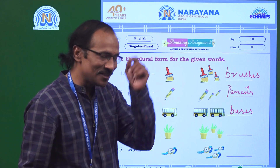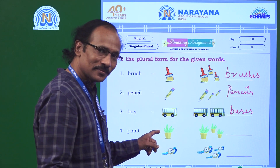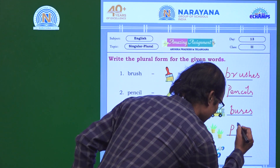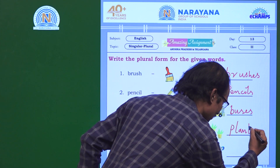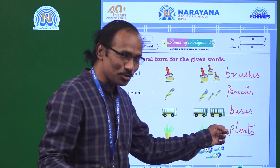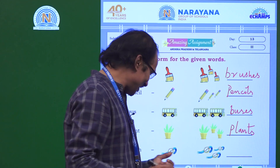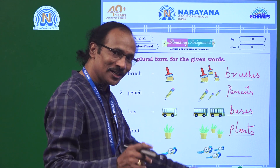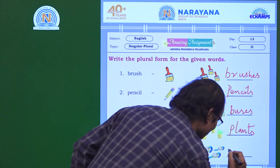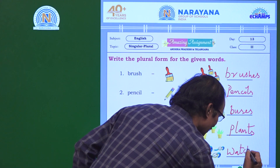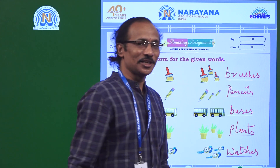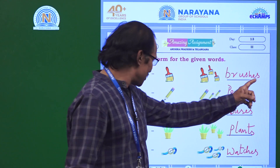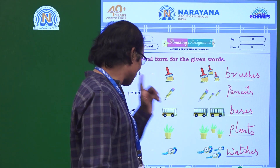Bus: there is one bus here, and there are two buses — we have added 'es'. Plant: one in number, there are three plants — we have added 's' to form the plural. Watch: there is one watch, but here there are three watches — 'es' is added to form the plural.